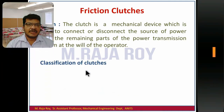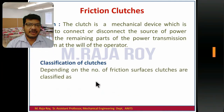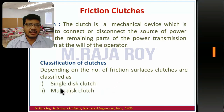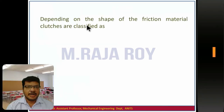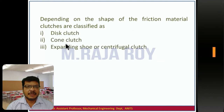These clutches are classified into different types. Based on the number of contact surfaces, these are classified as single disc clutch and multi-disc clutch. Depending on the shape of the friction material, these clutches are classified as disc clutch, cone clutch, and centrifugal clutch or expanding shoe clutch.